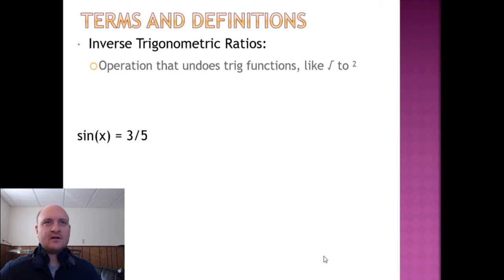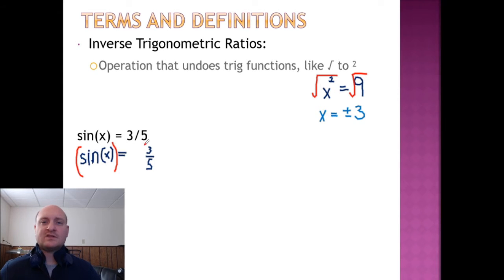So defining the inverses in trig, it means we're going to have to do the inverse ratio. Instead of doing like square or square rooting, we'll have to do sine and sine inverse. Much like you'd have to square root x squared to find that the answer is positive or negative 3, we would have to do the inverse of sine to find what x value makes it equal to 3/5. That inverse is going to affect both sides of the equation.